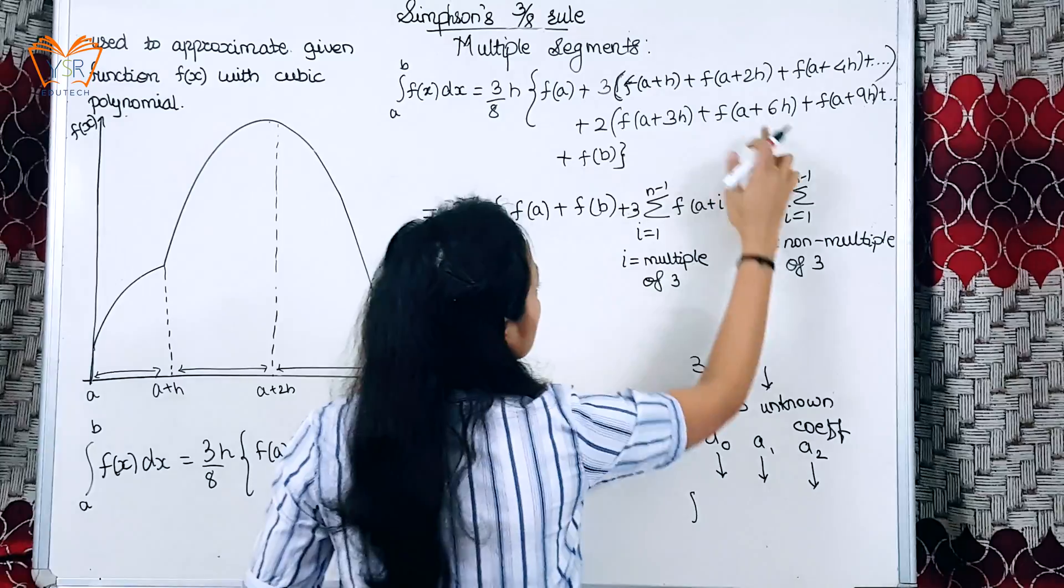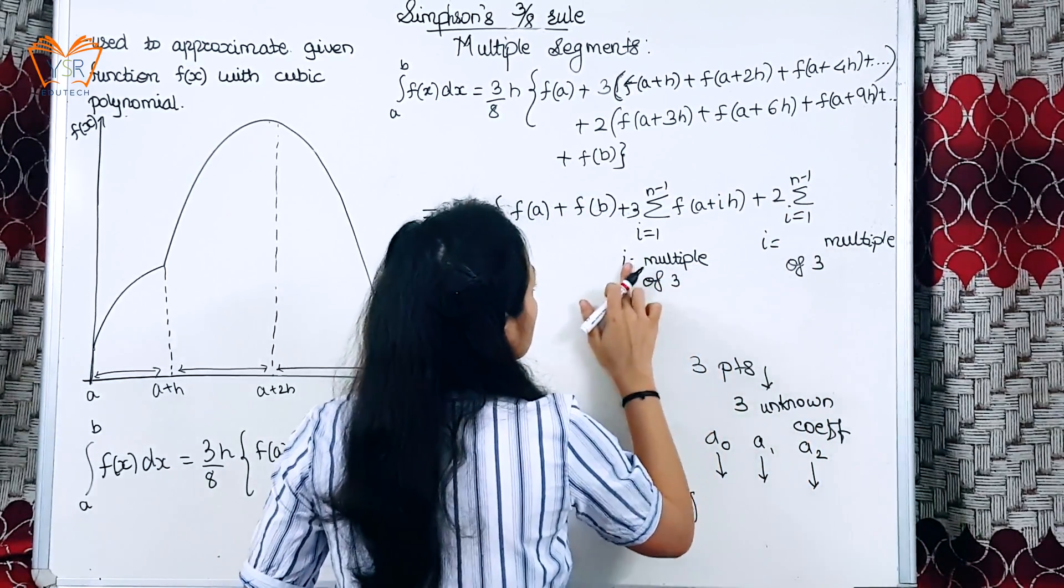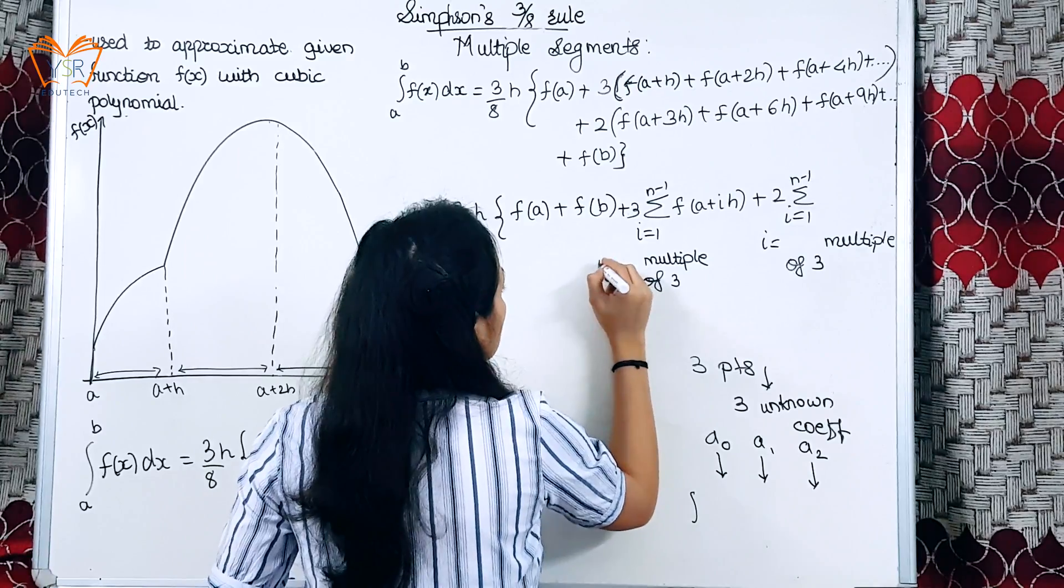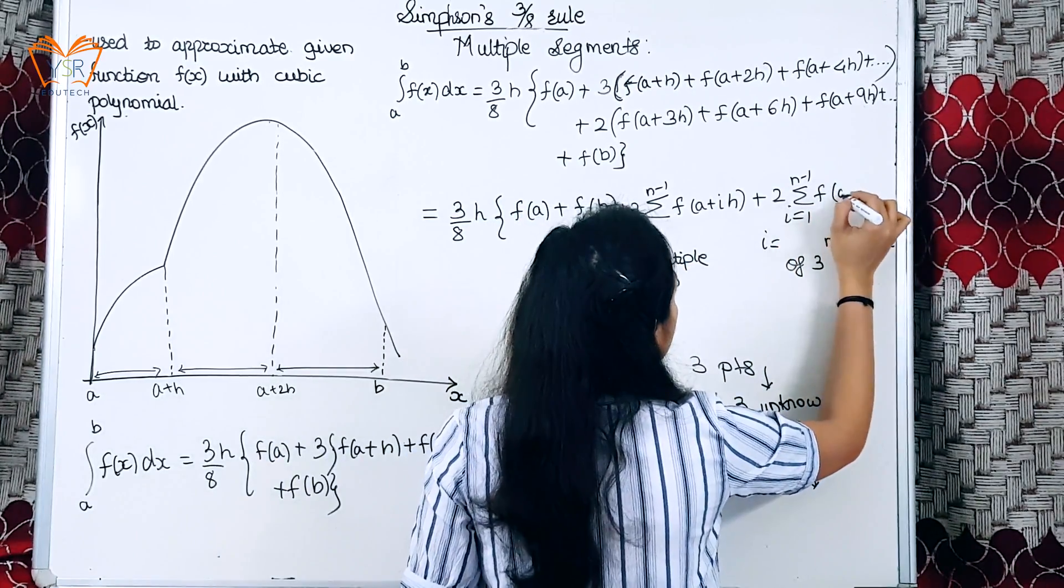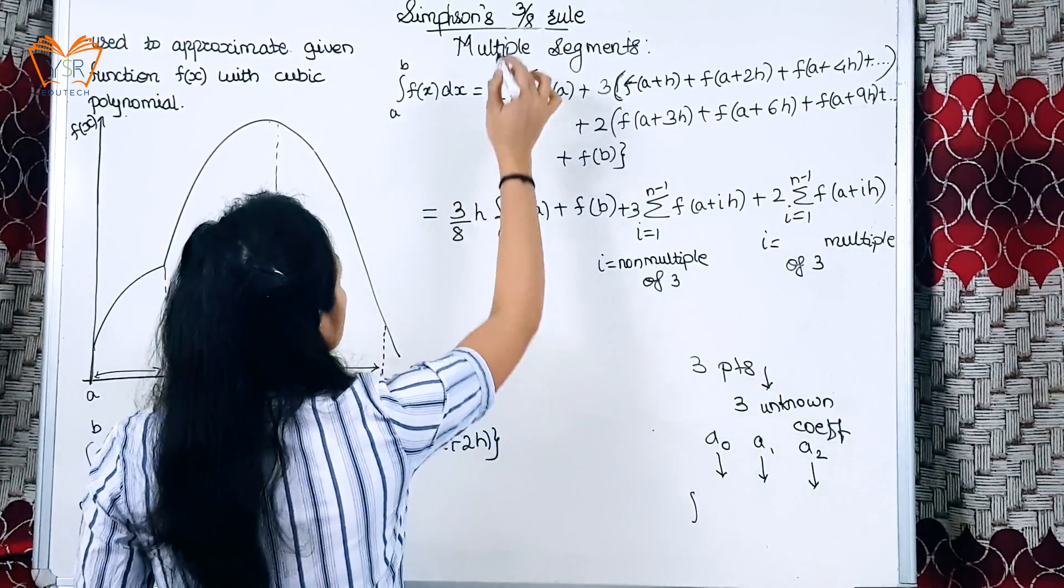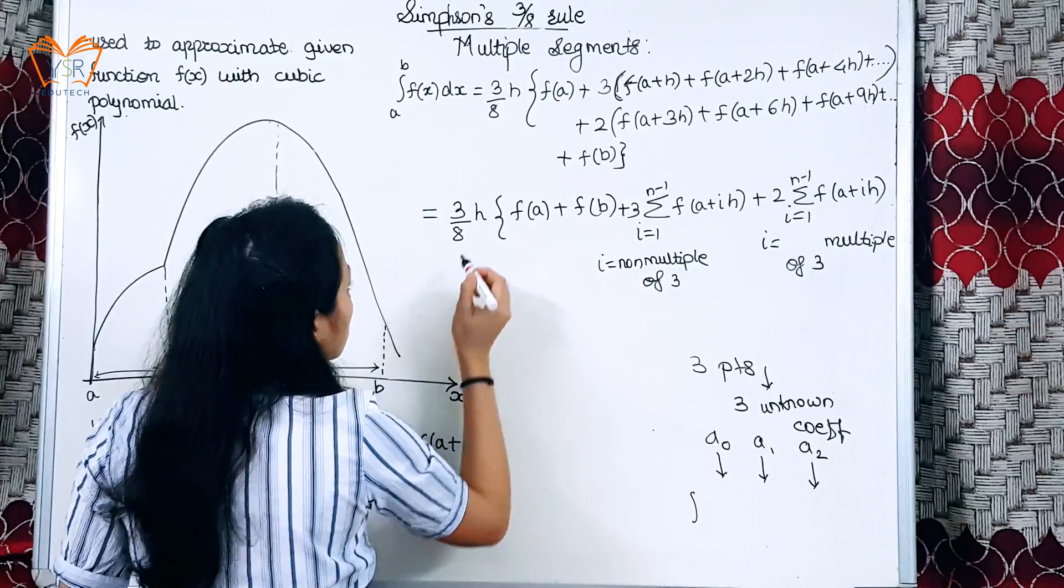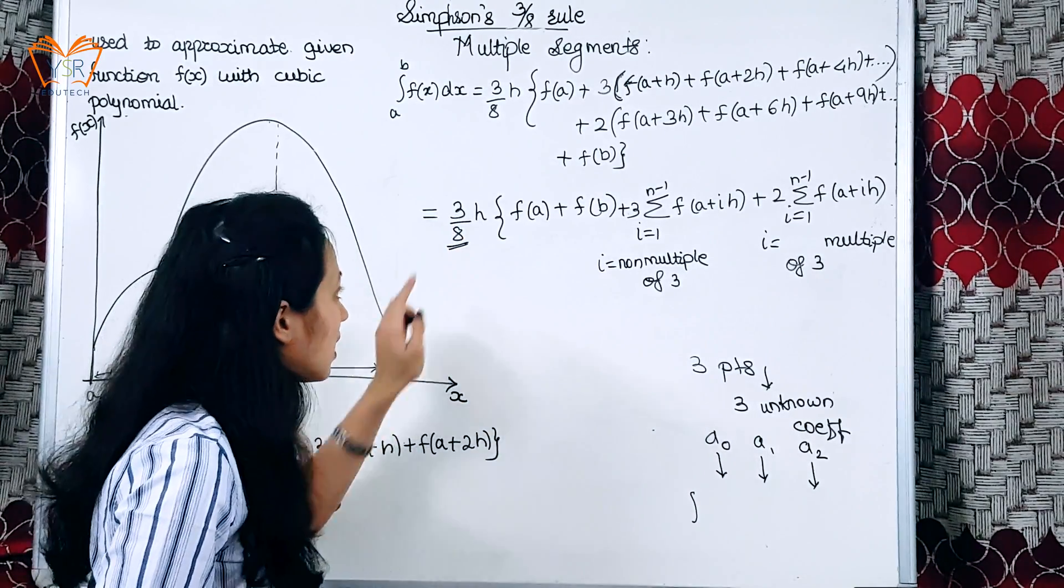Sorry, 2 is multiplied to multiples of 3, and 3 is multiplied to non-multiples of 3, f(a+ih). And this rule is called Simpson's 3/8 rule because the constant that we obtained from the derivation is 3 by 8.